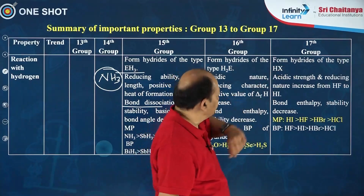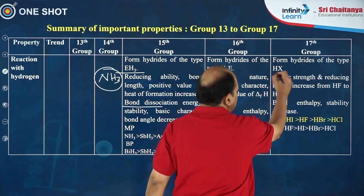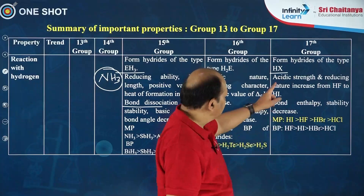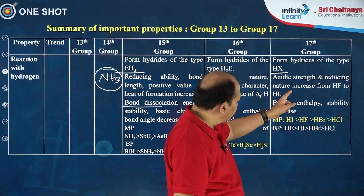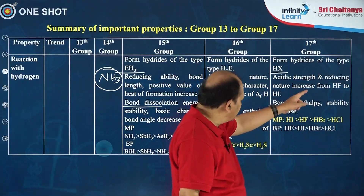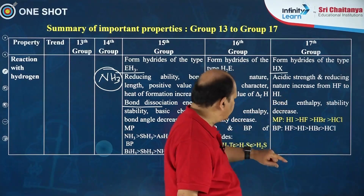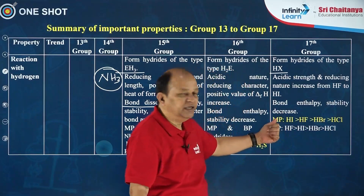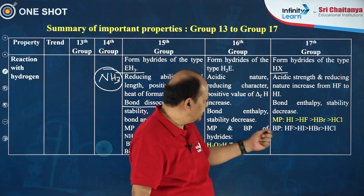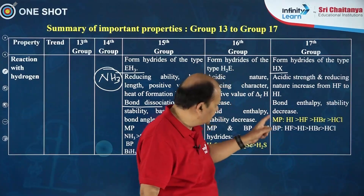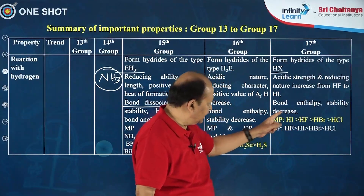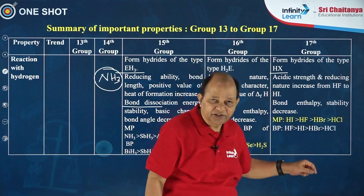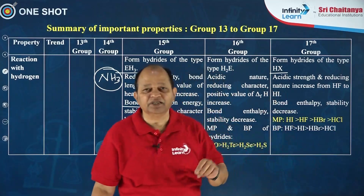Coming to group 17, they form hydrides of type HX. Acidic strength and reducing nature increase from HF to HI, whereas bond enthalpy and stability decrease. These are the orders corresponding to the melting point and boiling point of hydrides of group 17.